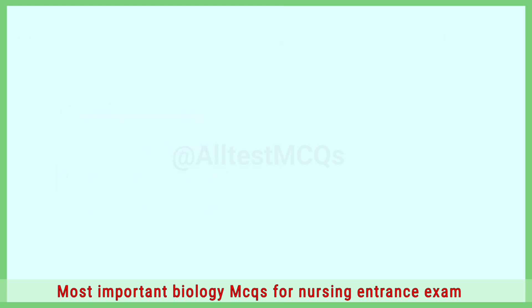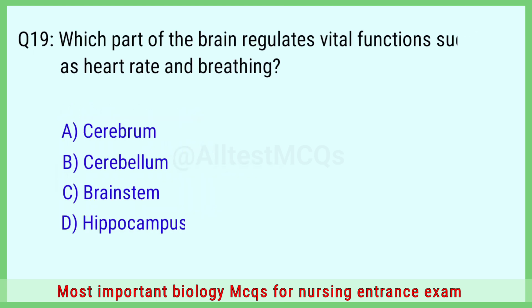Question number 19: Which part of the brain regulates vital functions such as heartbeat and breathing? The right answer is option C: brain stem.